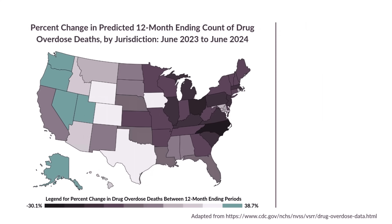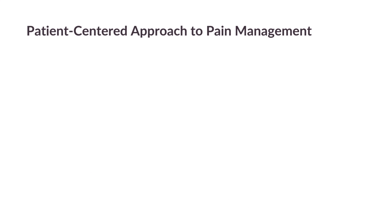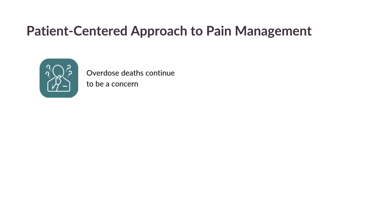Some positive news includes new data released by the CDC, which indicates that from June of 2023 to June of 2024, overdose deaths have declined approximately 14%. This is a reversal of drug overdose mortality numbers compared to trends from the prior decade, and reflects efforts such as access to naloxone and medications like buprenorphine. This is a very uplifting change in trend. However, it is important to remember, overdose deaths continue to be a large concern.